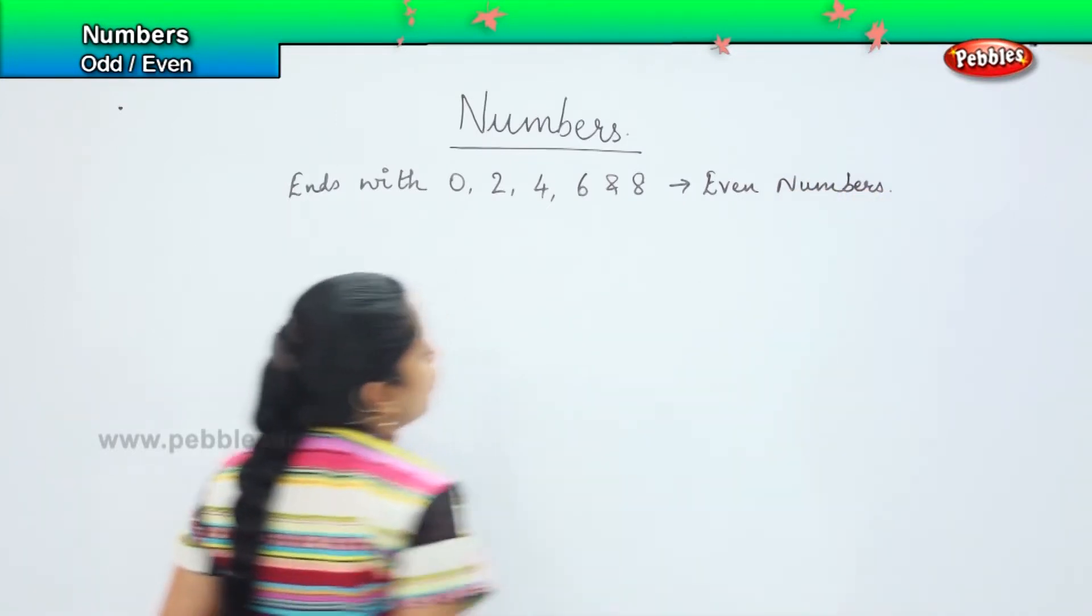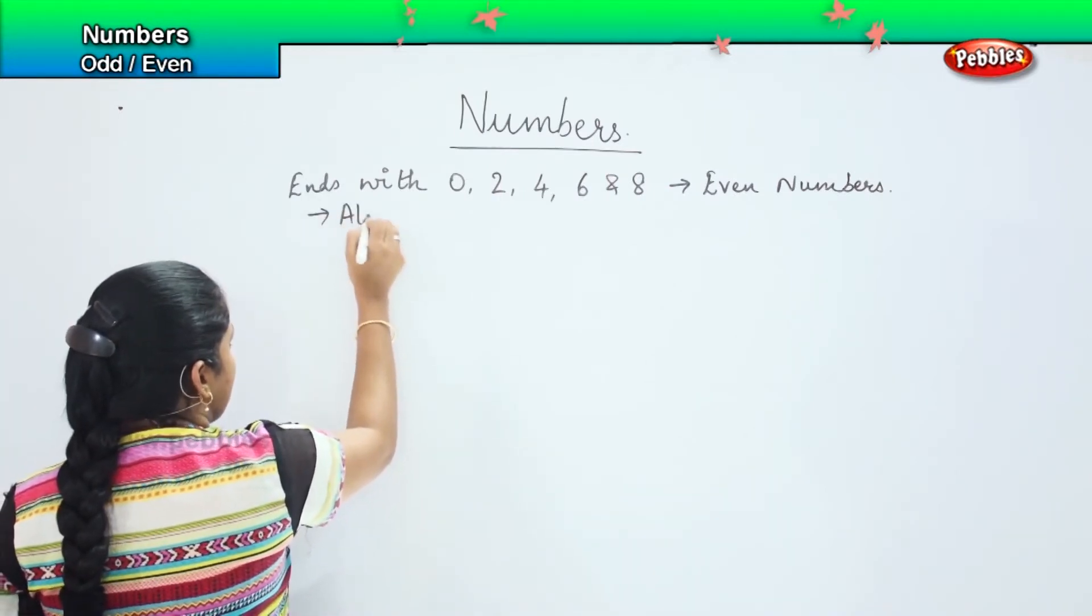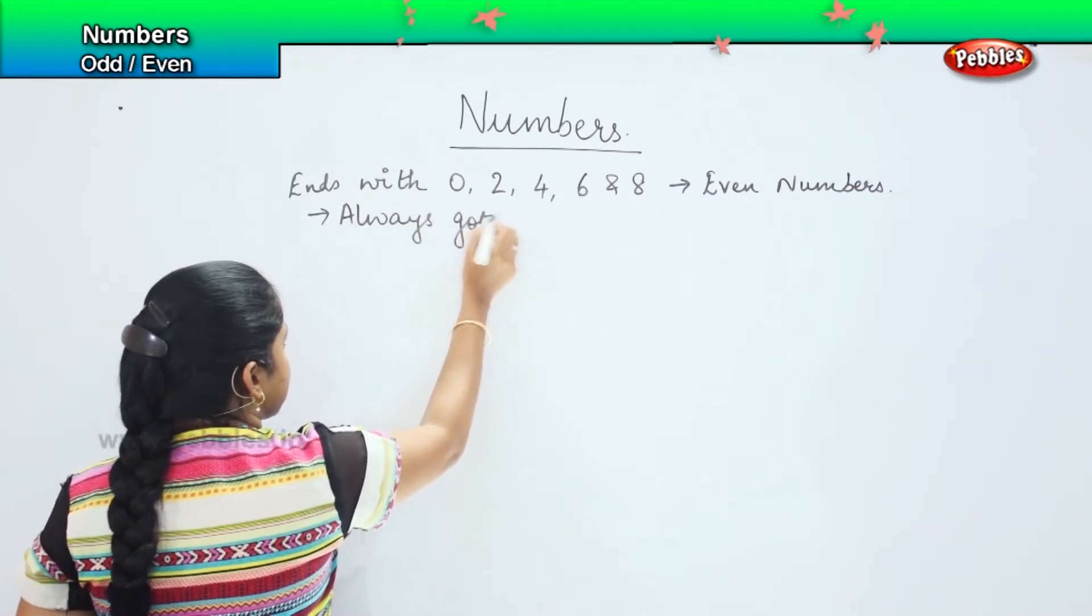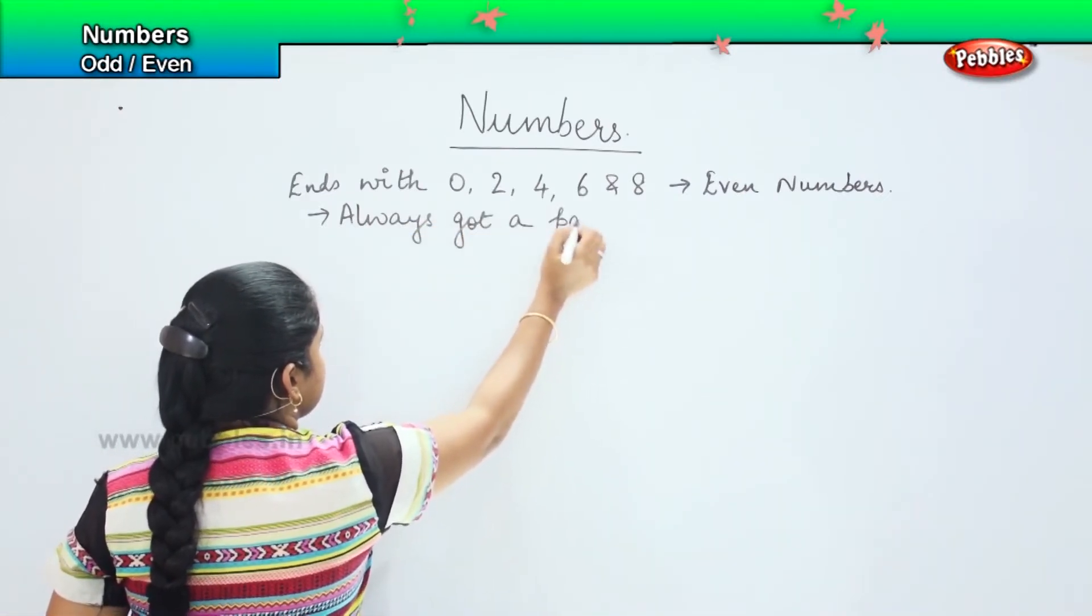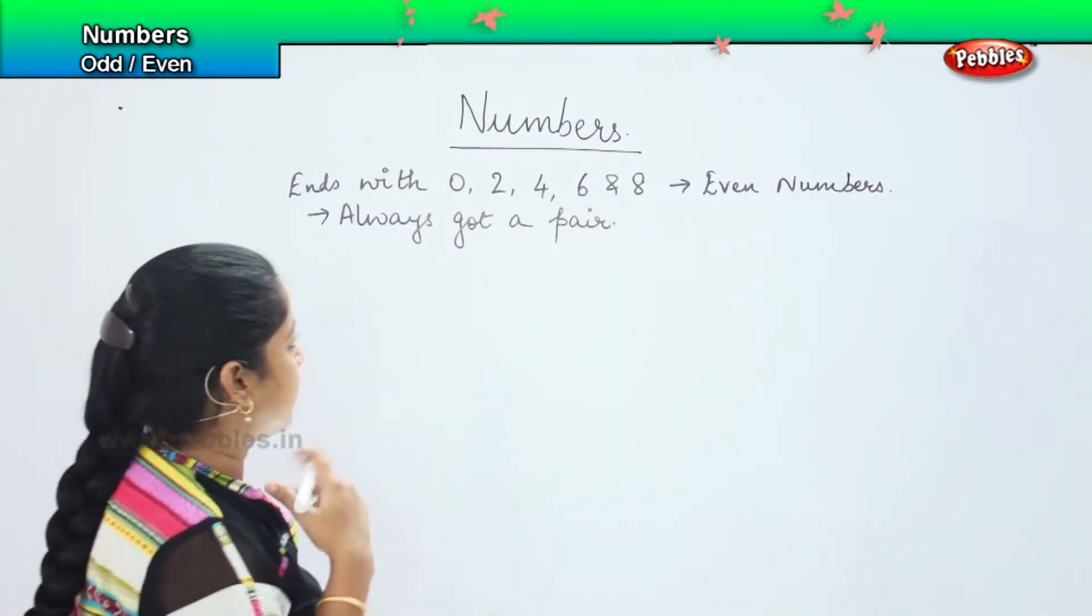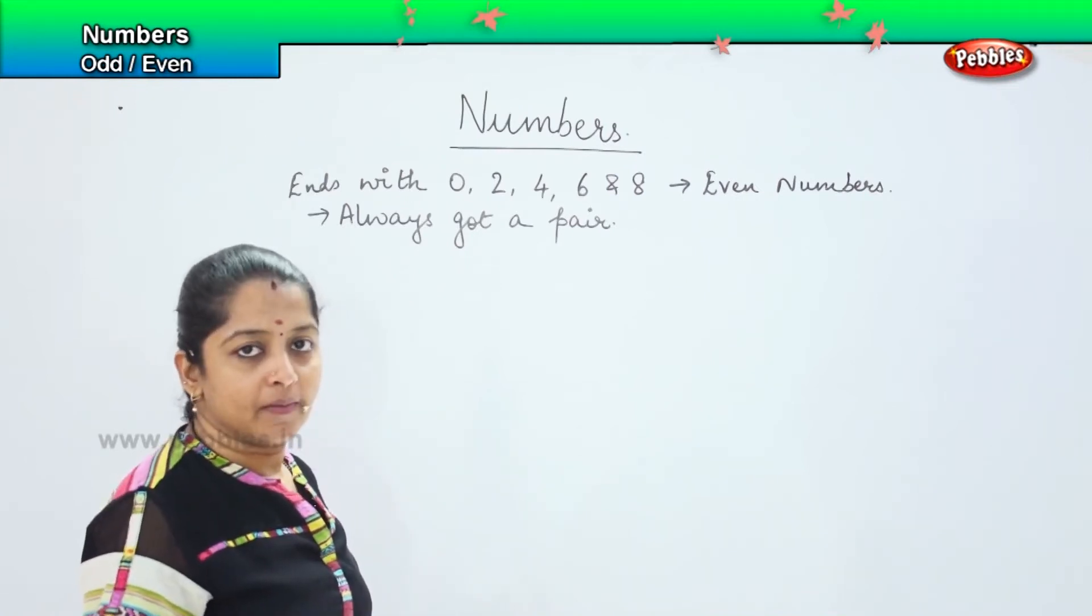Okay? You can also tell the even number has always got a pair. You always find a pair with the even number. It's easy for you to divide them into pairs.